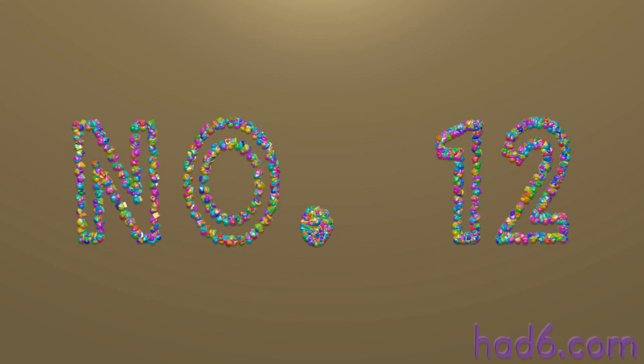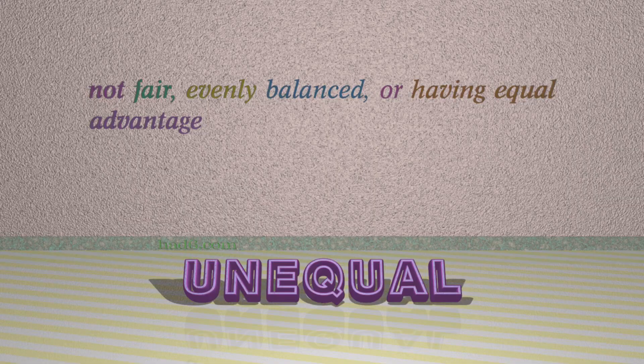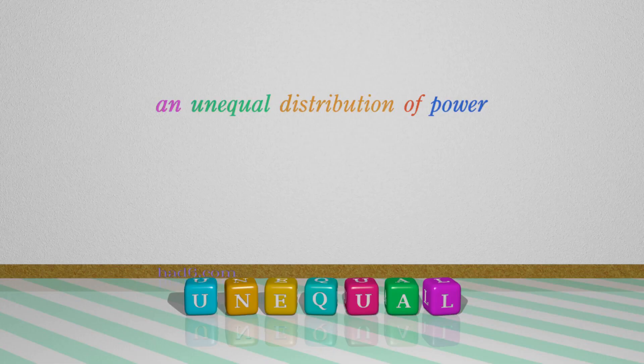Number 12: Unequal — which means not fair, evenly balanced, or having equal advantage. For example: An unequal distribution of power.